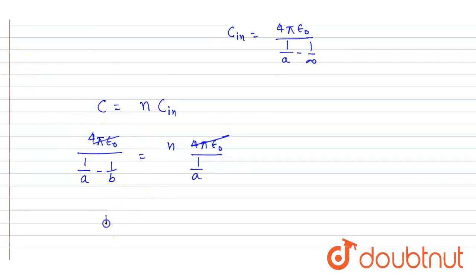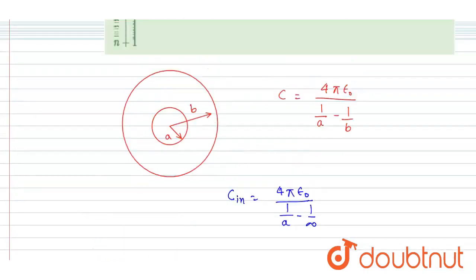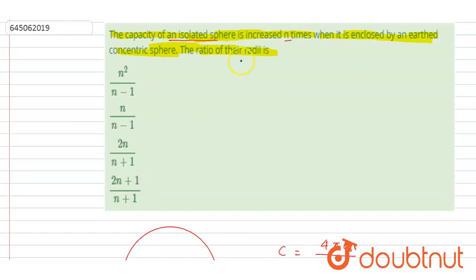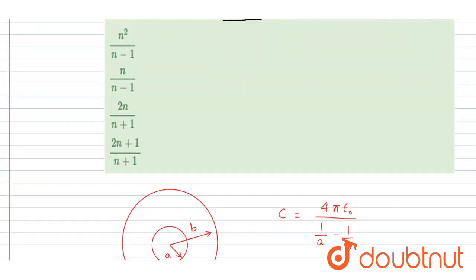And if you cross multiply, you will get 1/a equals n(n/a minus 1/b). And if you see in the question, what we want here is ratio of the radii, right? So let us find out the ratio of the radii.